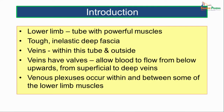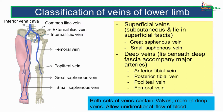Venous plexuses occur within and between some of the lower limb muscles. Let us classify the veins of the lower limb. We can classify them as superficial veins — veins which lie subcutaneously, present in the superficial fascia — and these include the great saphenous vein and the small saphenous vein.